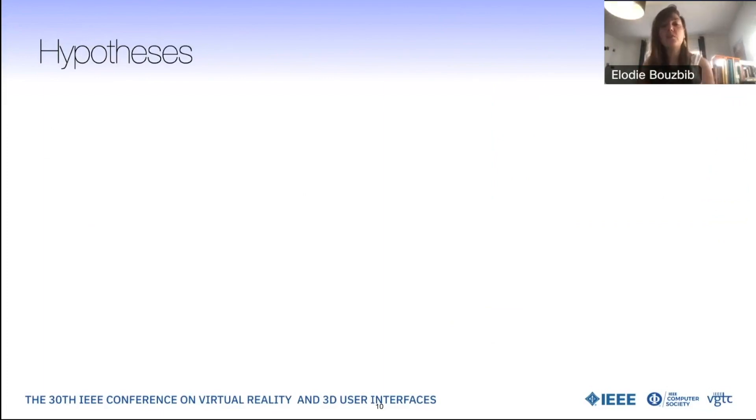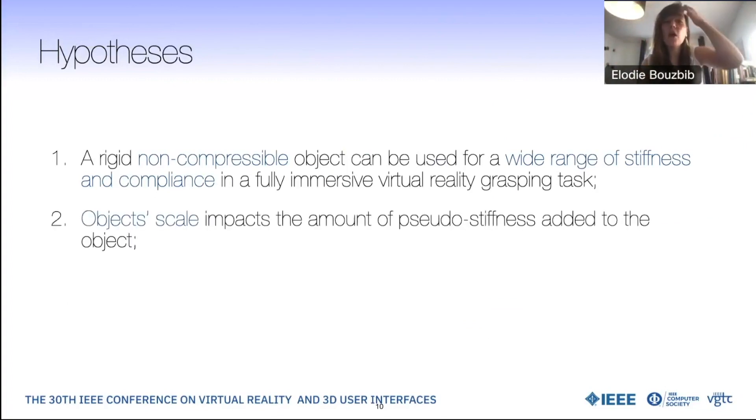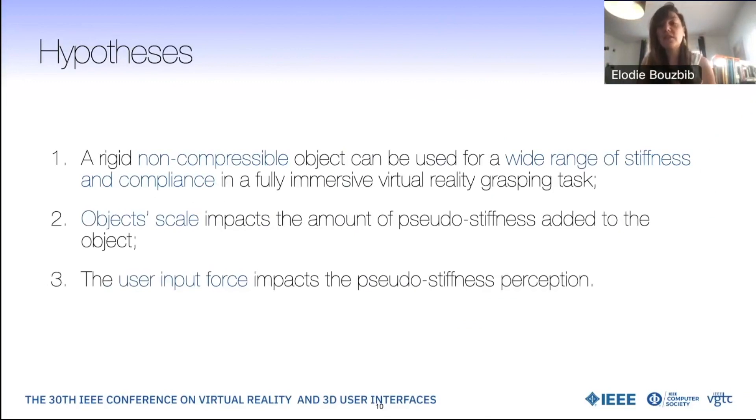The hypothesis of this work are threefold. First, a rigid non-compressible object can be used for a wide range of stiffness and compliance in a fully immersive virtual reality grasping test. Second, object scales impact the amount of pseudo-stiffness added to the object. And third, the user input force impacts the pseudo-stiffness perception.